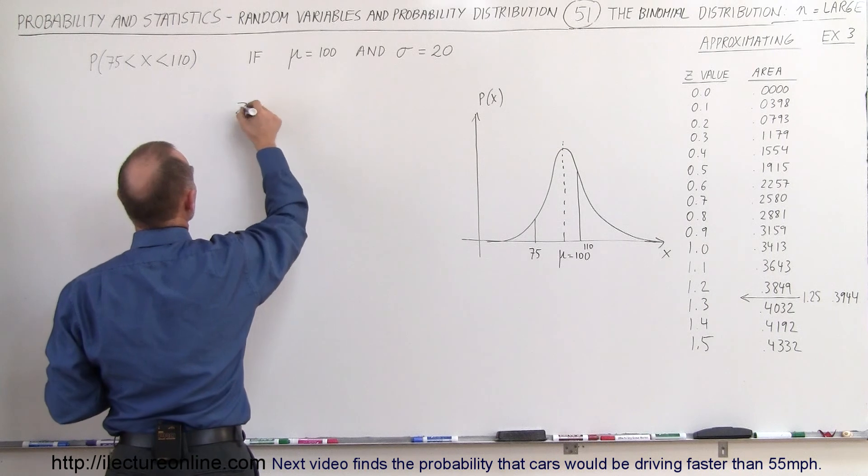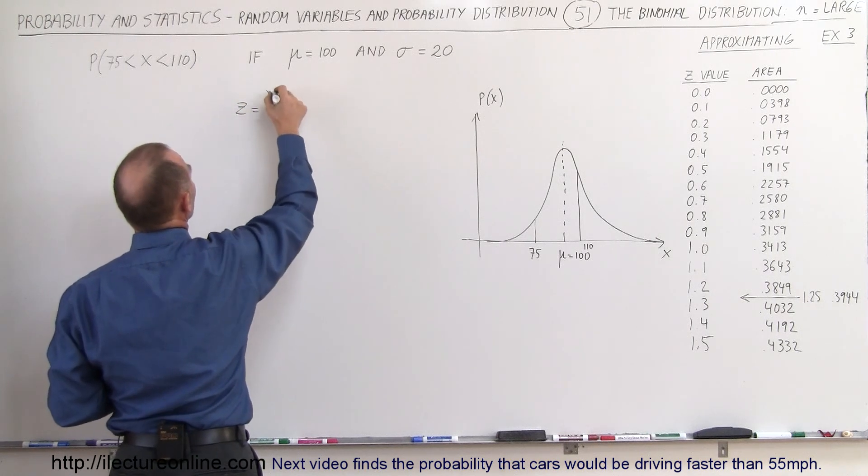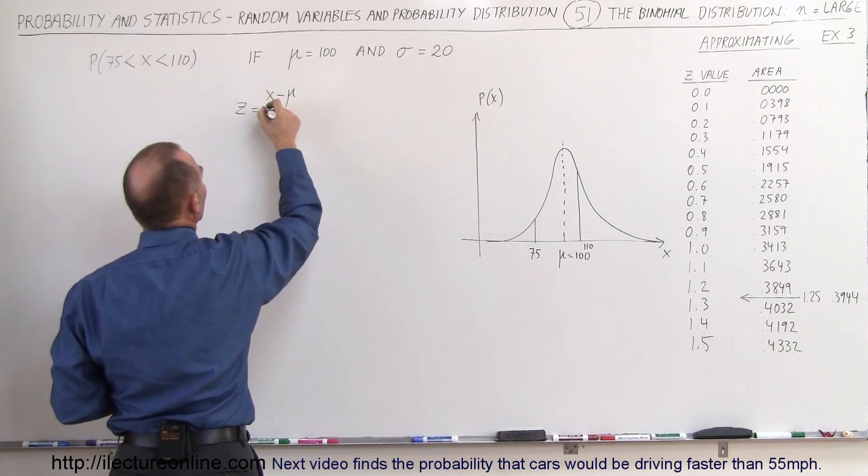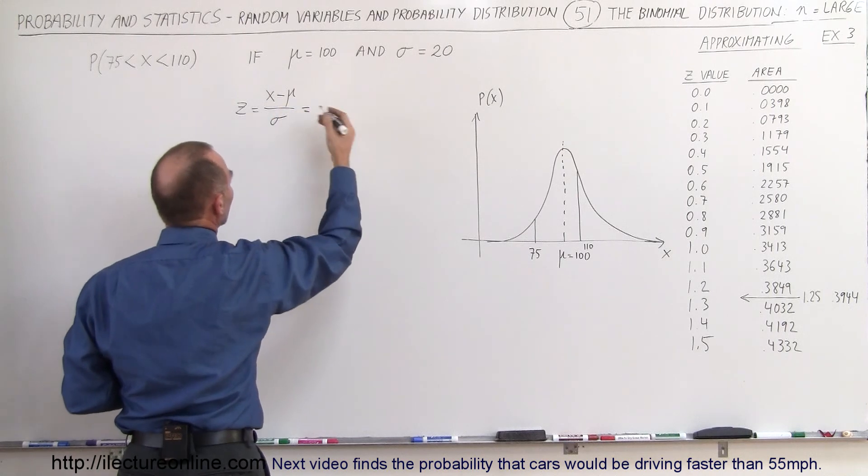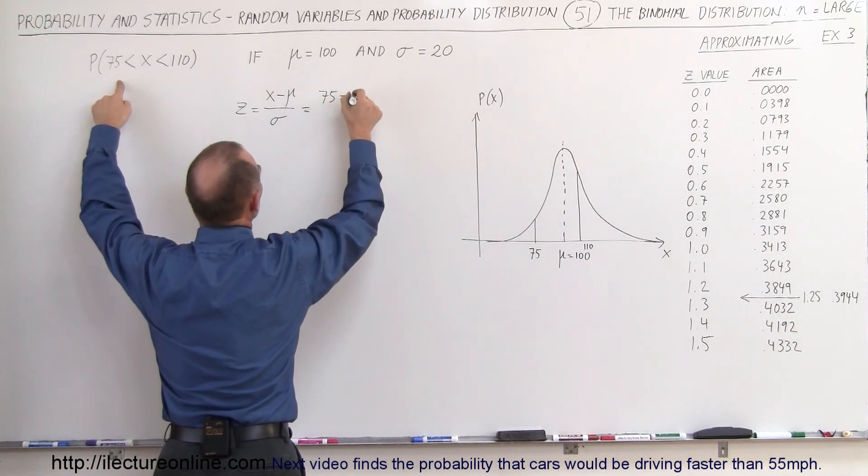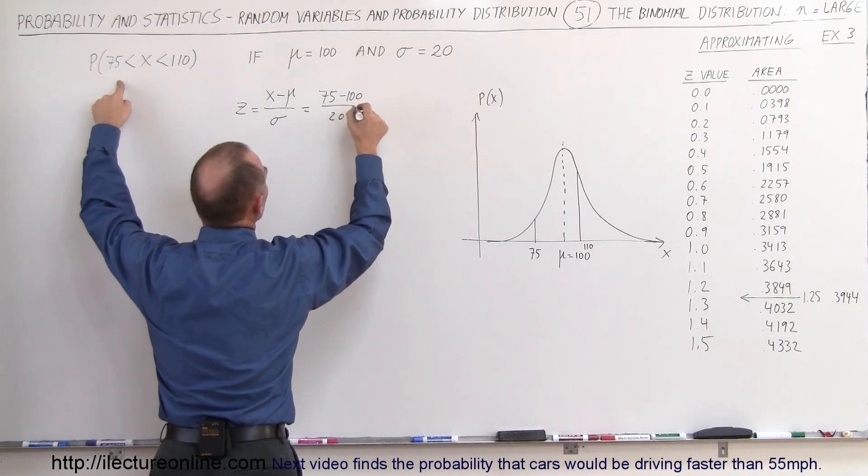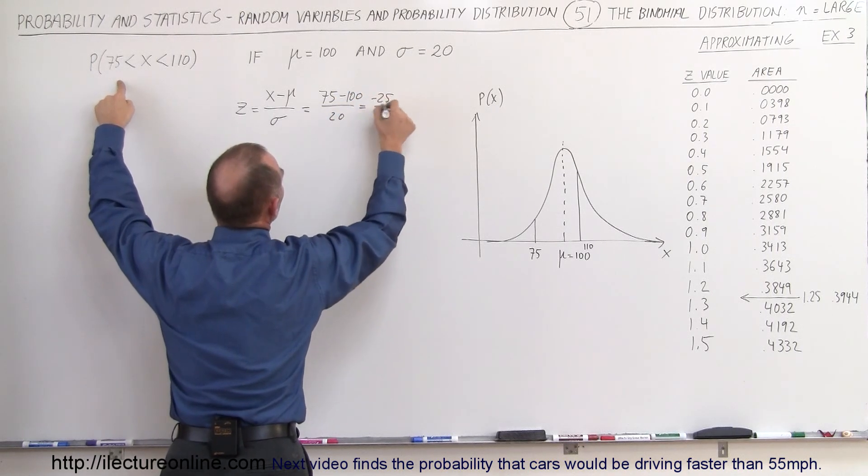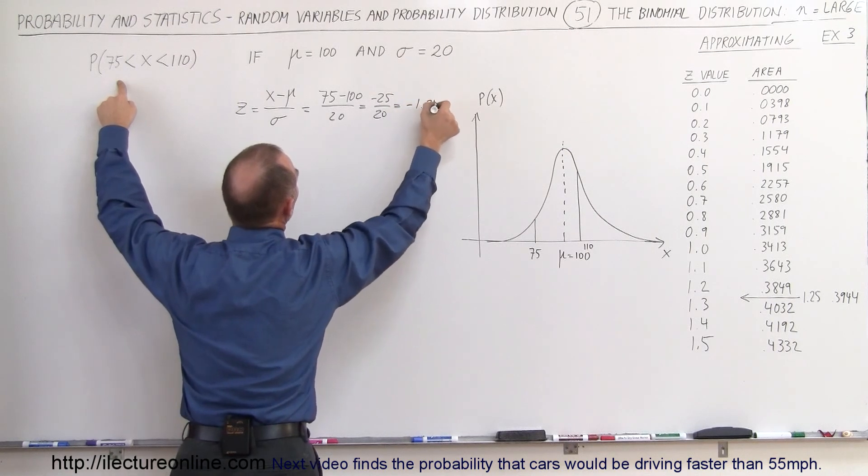So the z value is equal to x minus the expected value divided by sigma, which is the standard deviation. So let's try 75 minus 100 divided by 20, which is minus 25 divided by 20, which is minus 1.25.